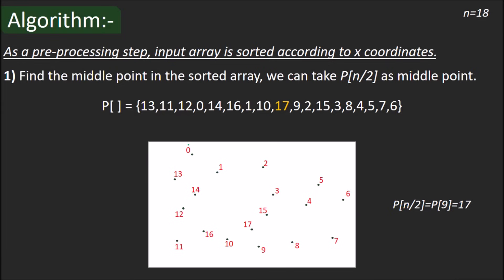As you can see if we start from the left, elements in P will be 13, 11, 12, 0, 14 and so on. The first step says find the middle point in the sorted array. Since n is 18 in the given example, the middlemost point is P[n/2] that is 0.17.